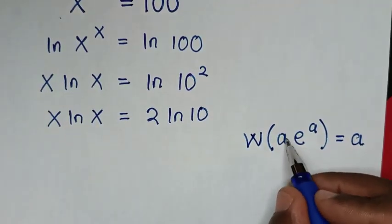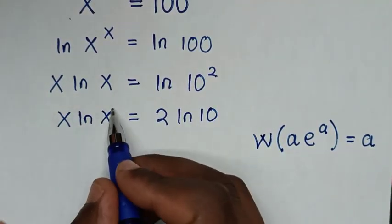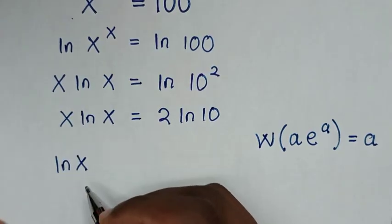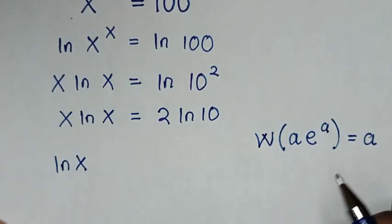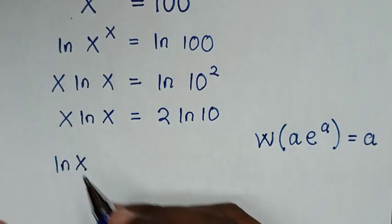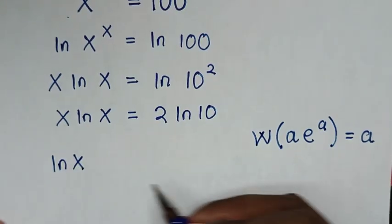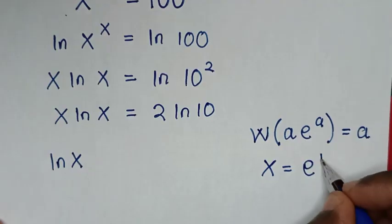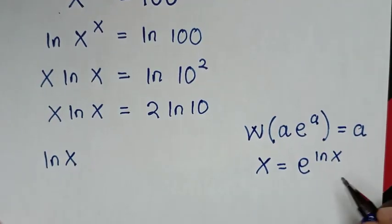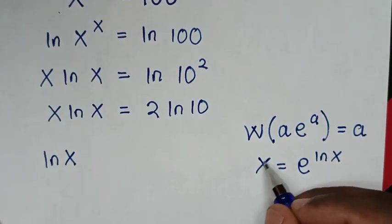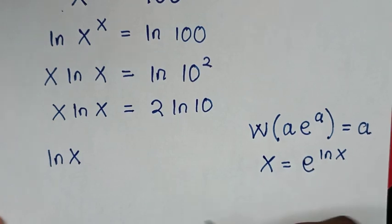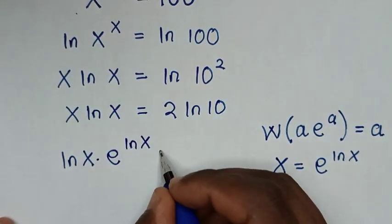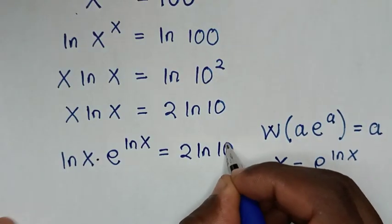Then from here, A will represent ln of x, so it will be ln of x. Then e to the power of A — for this x to be in terms of e — x is equal to e to the power of ln of x. So e to the power of ln of x is x, so we'll substitute this, and it will be ln of x times e to the power of ln of x is equal to 2 ln of 10.